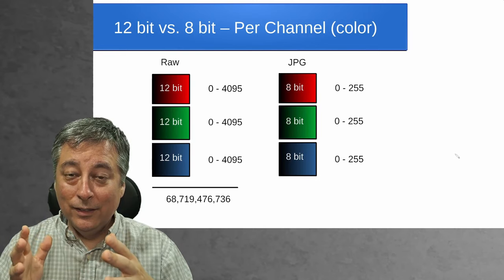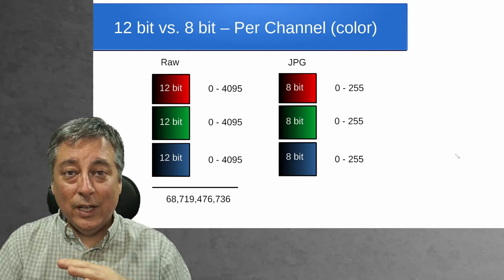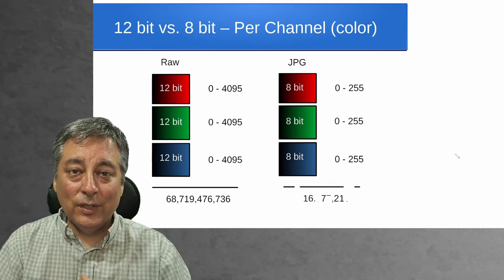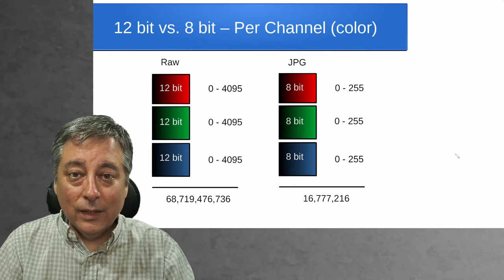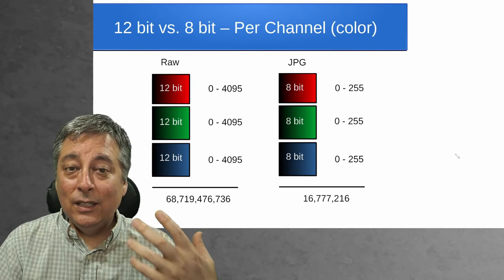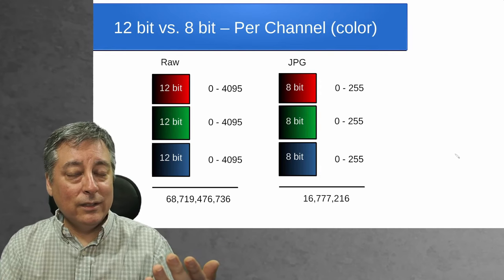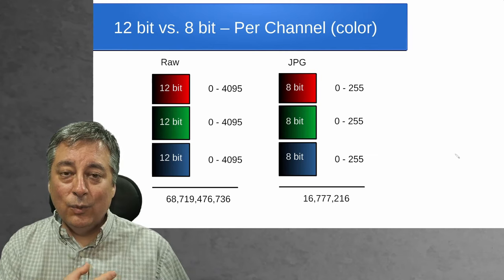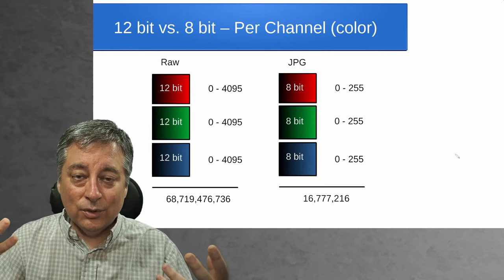That's a lot. Now in a JPEG image, we only have a range between 0 and 255. Including the 0, we multiply 256 times 256 times 256 and we get 16,777,216 colors. That's a lot of colors too that we can represent even in a JPEG image. And that's why a lot of times when you look at JPEGs and RAW side by side, they look exactly the same. But we need to put these numbers in context — what is 16 million colors, what is 68 billion colors? Those are such huge numbers.